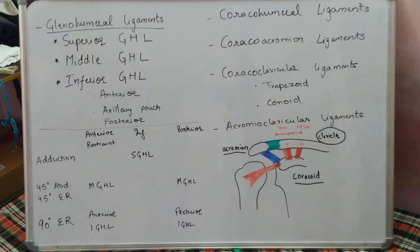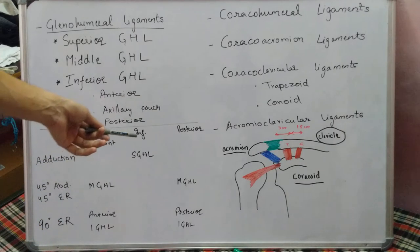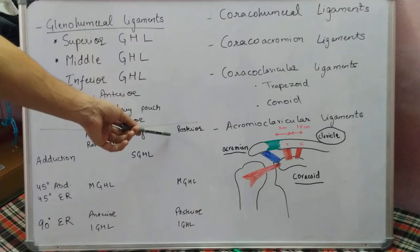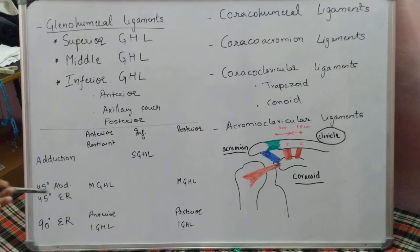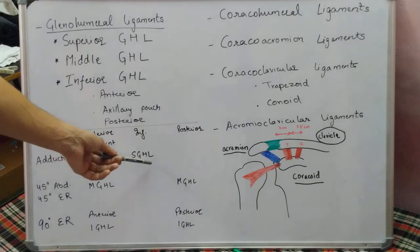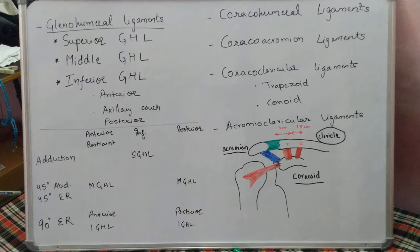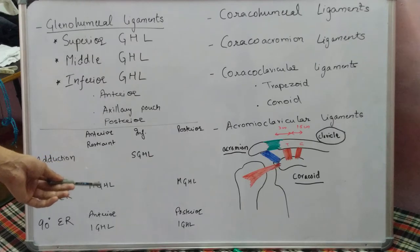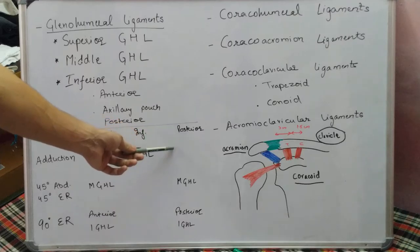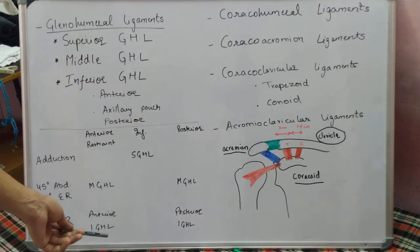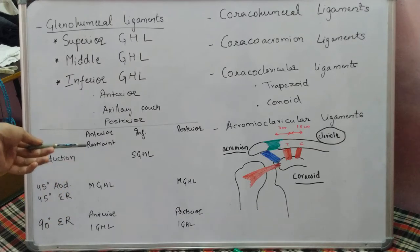Regarding their functions, all these ligaments act as restraints to various types of dislocation. The anterior restraint prevents anterior dislocation, the inferior prevents inferior dislocation, and the posterior restraint prevents posterior dislocation. When the arm is in adduction, the superior glenohumeral ligament acts as an inferior restraint. At 45 degrees of abduction and external rotation, the middle glenohumeral ligament acts as both anterior and posterior restraint. At 90 degrees of external rotation, as when throwing, the inferior glenohumeral ligament — both anterior and posterior parts — acts as a restraint to dislocation.